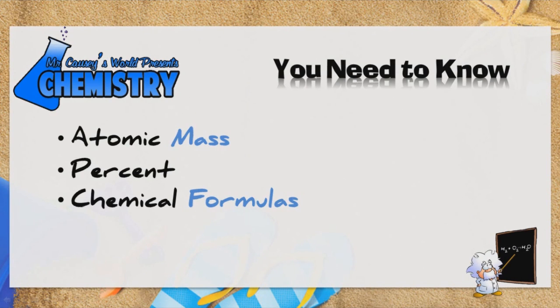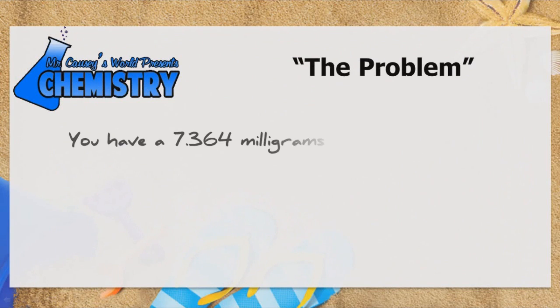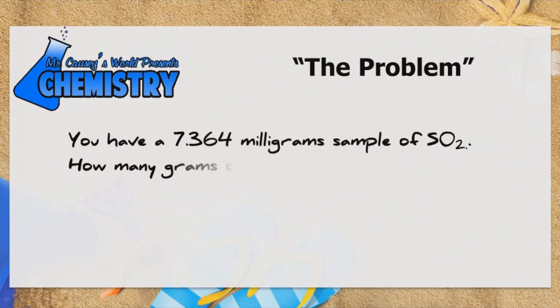But if you're ready, let's look at this week's problem. You have a sample of 7.364 mg of sulfur dioxide. How many grams of sulfur are in the sample?